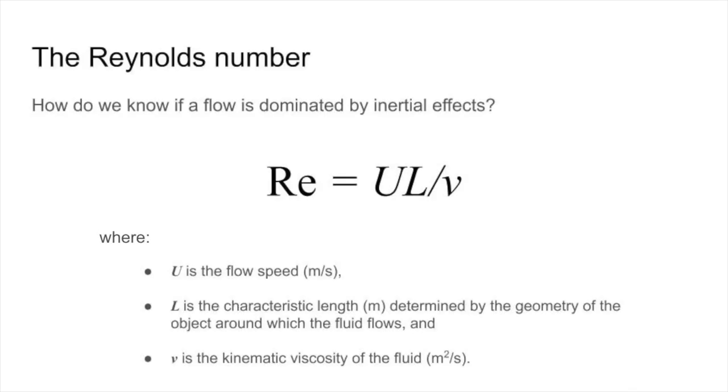The Reynolds number is an important dimensionless number in fluid mechanics, which allows us to determine the relative importance between the inertial forces and the viscous forces in a fluid. We have discussed how the inertial forces of a fluid result from the motion of a body immersed in that fluid.